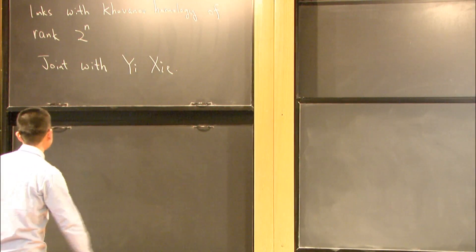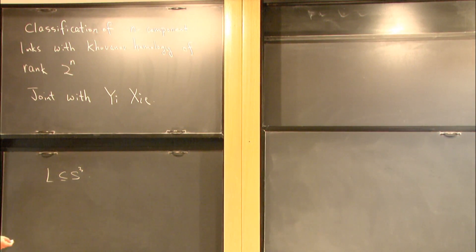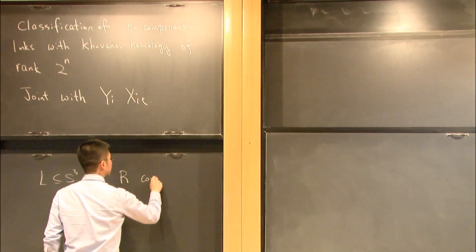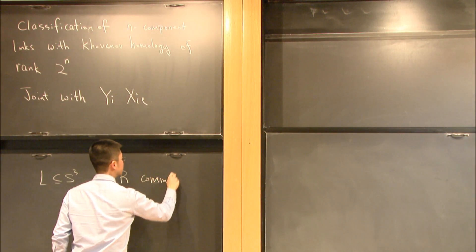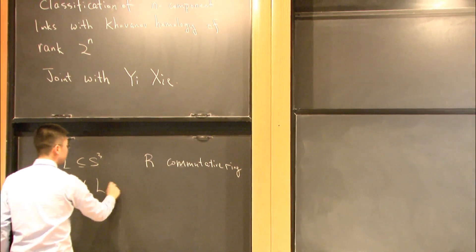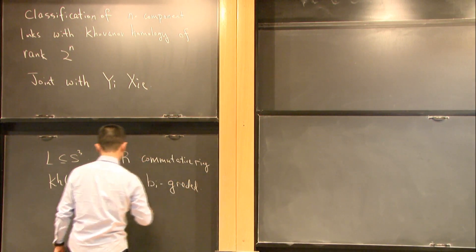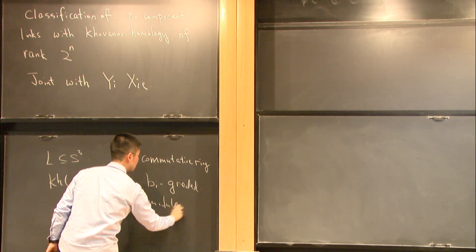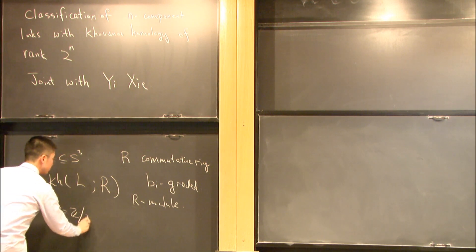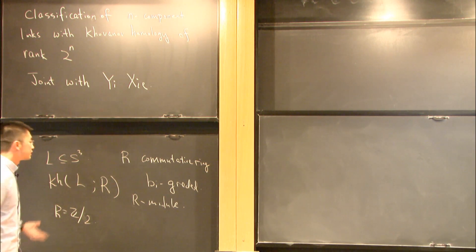Let me start by giving a brief introduction to quantum homology. If we have a link L in S³, then the quantum homology is a bi-graded homology, and that is a link invariant. If we choose R to be a commutative ring, then the quantum homology with coefficient ring R is a bi-graded R module and it is a link invariant. In this talk, I'll just take R to be Z over 2, which simplifies the argument a little bit, and it's also a crucial condition in the statement of the main theorem.